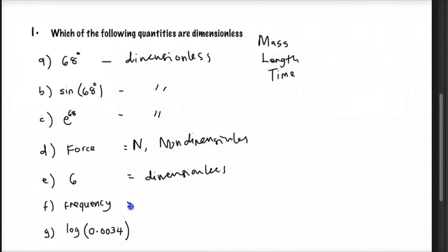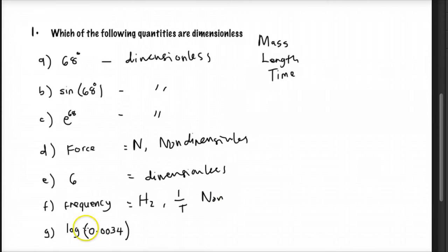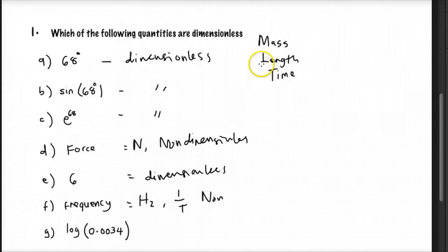Frequency is in hertz, and hertz is 1 over time, so frequency is not dimensionless — it has a dimension. The last one is log of 0.0034. The logarithm doesn't carry a dimension of mass, length, or time, so log is a dimensionless quantity.